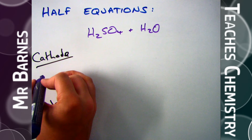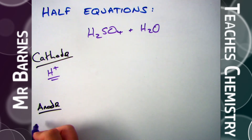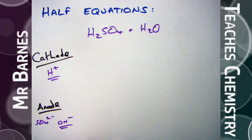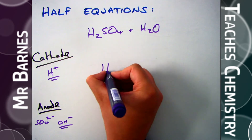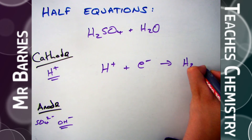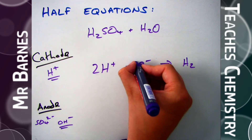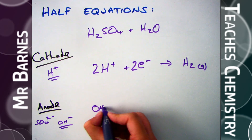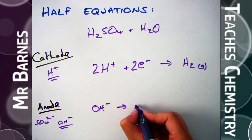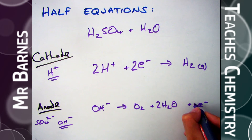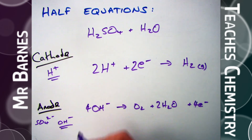Looking at sulfuric acid in water: at the cathode there's only H⁺, and at the anode there's SO₄²⁻ or OH⁻. H⁺ needs to gain an electron to go back to hydrogen — hydrogen is diatomic, so there are two of them: 2H⁺ + 2e⁻ → H₂. At the anode, again it's OH⁻ going to oxygen and water. Balancing: 4OH⁻ → O₂ + 2H₂O + 4e⁻.